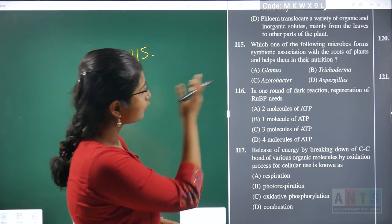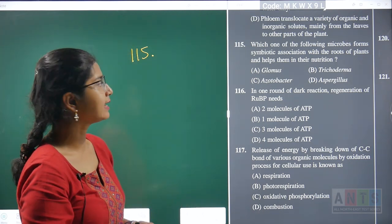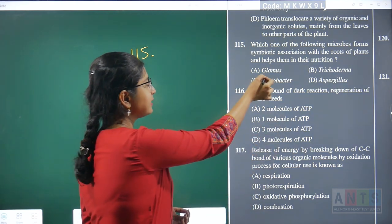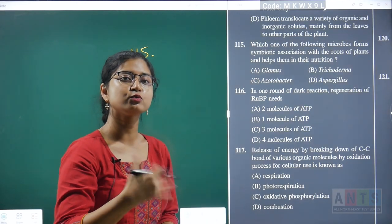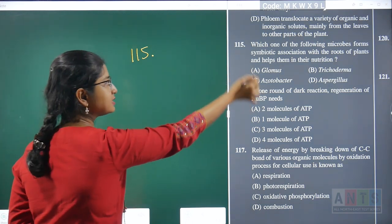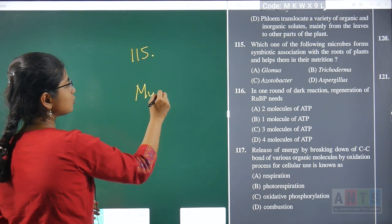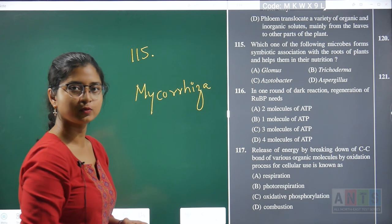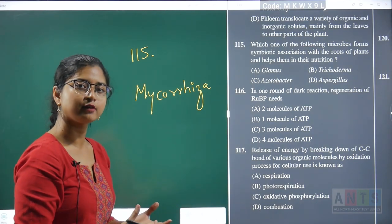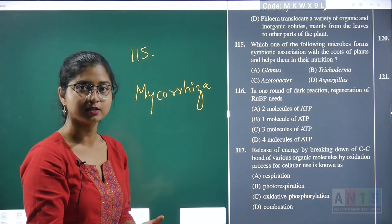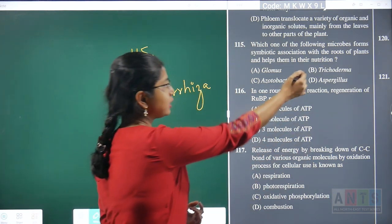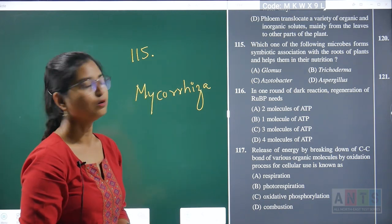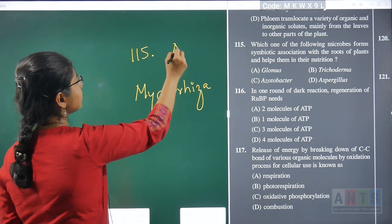Question 115: which microbe forms a symbiotic association with roots of plants and helps in nutrition? Glomus is a fungus that forms association with roots of higher plants, called a mycorrhizal association. This association increases surface area for absorption and facilitates better nutrient uptake. Trichoderma, Azotobacter, and Aspergillus do not form such symbiotic associations with roots. Hence, question 115's correct answer is option A.